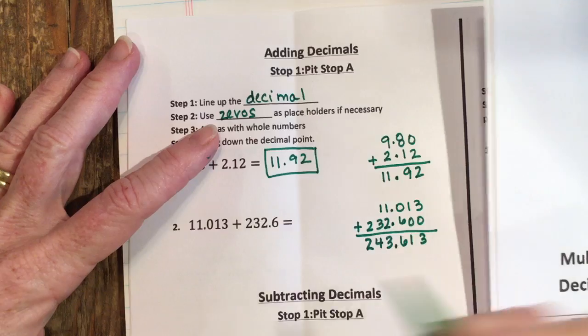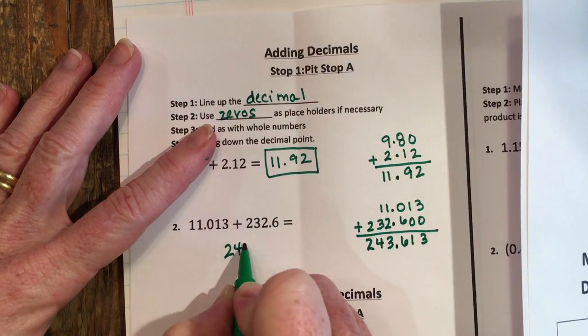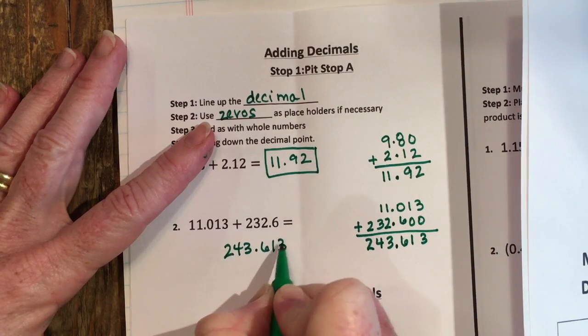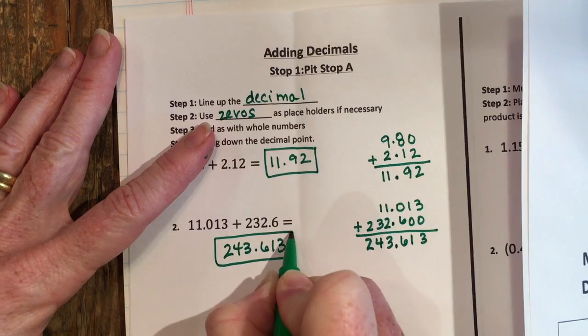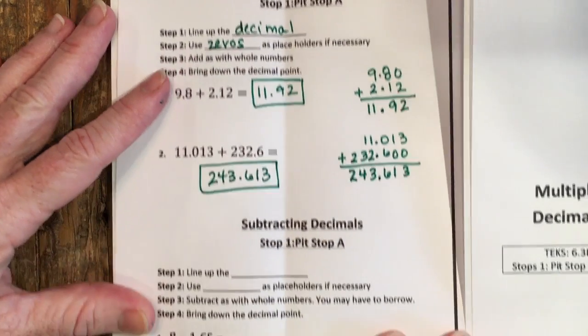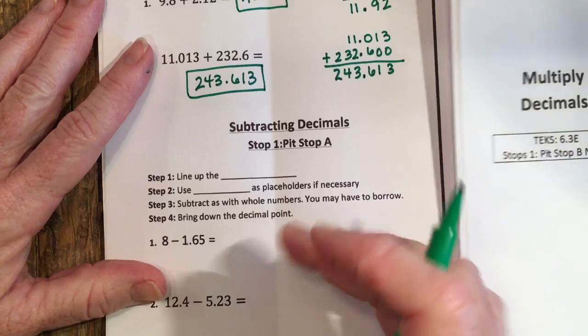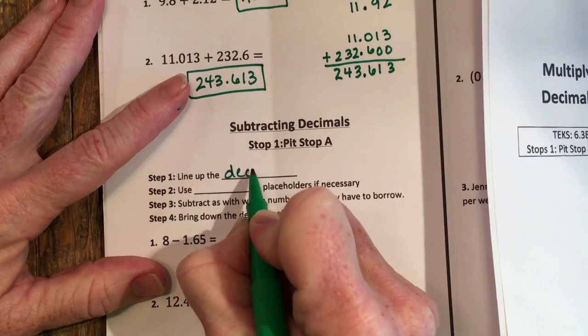All right, basically the rules for subtraction are the same. You want to line up the decimal points.